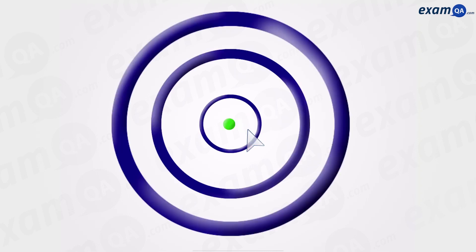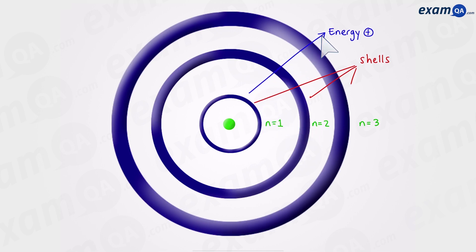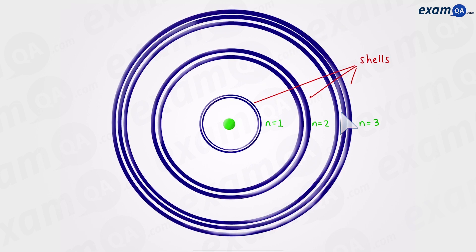Electron configuration. Here we have the structure of an atom. At the centre we have the nucleus and around it we have the shells. Shells are fixed energy levels where electrons orbit the nucleus. The shells that are further away have more energy. In this video we're going to be looking at the structure of shells and how electrons are organised in an atom. By the end of it you should be an expert at electron configuration.